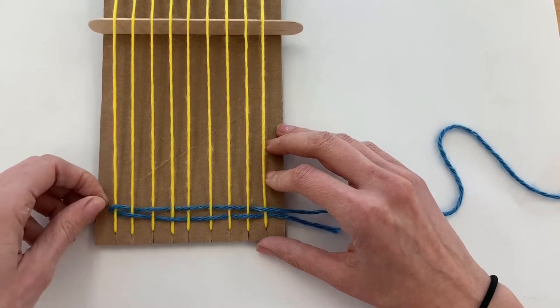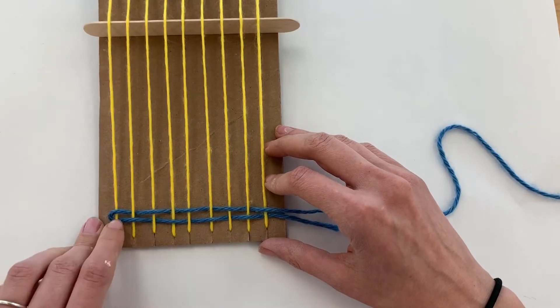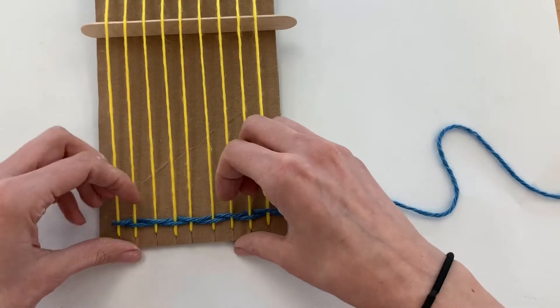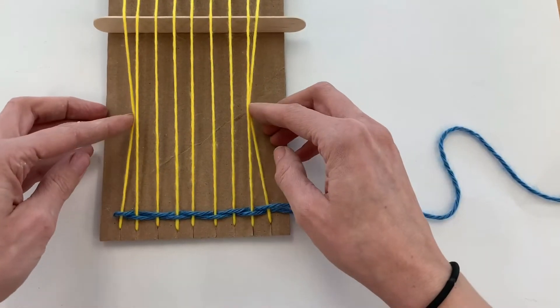So I have to leave something called a weaver's bubble on the end, like this. And then I just press it all the way down. That stops the warp strings from coming in.